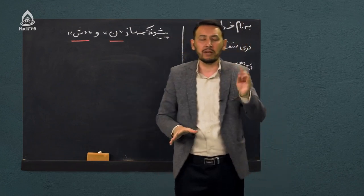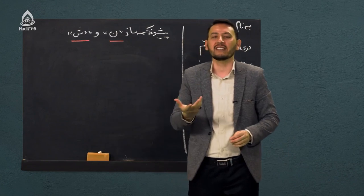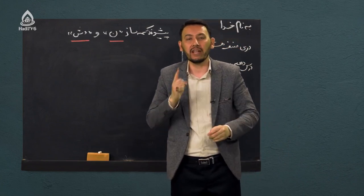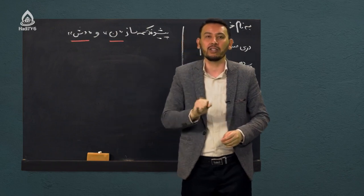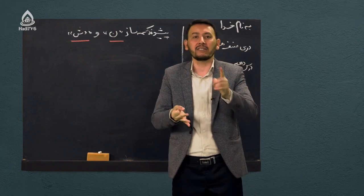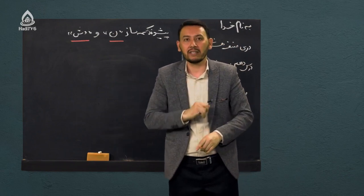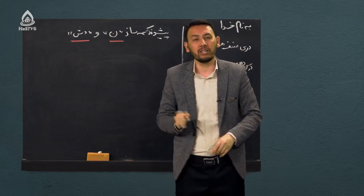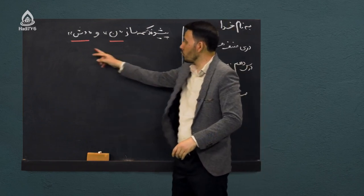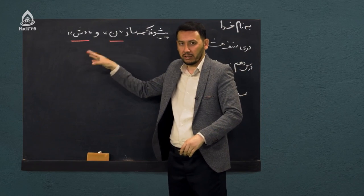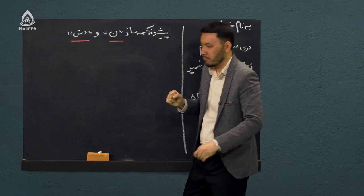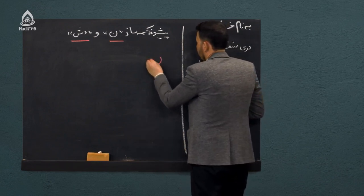یا پیشوند صرفی است یا پیشوند کلمه‌ساز است. پیشوند صرفی پیشوندهایی هستند که فقط بر سر فعل داخل میشوند. در حالی که پیشوندهای کلمه‌ساز بر سر فعل، بر سر اسم و بر سر صفت هم می‌آیند و یک کلمه را با معنای جدید می‌سازند. حال دو علامت «نون» و «دوش» پیشوند کلمه‌ساز هستند.